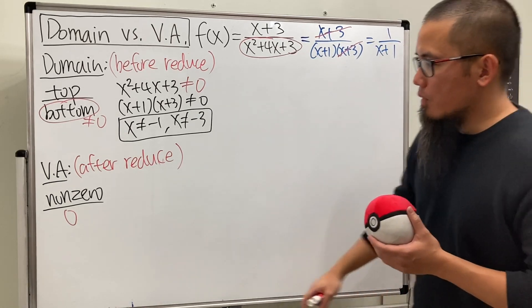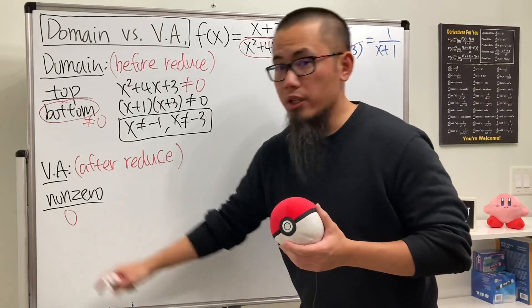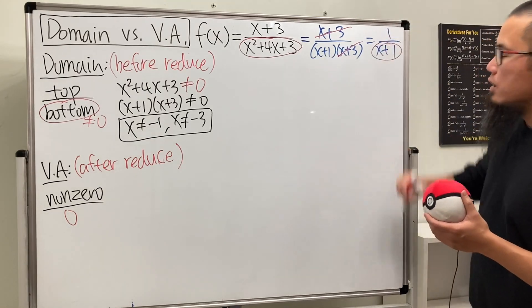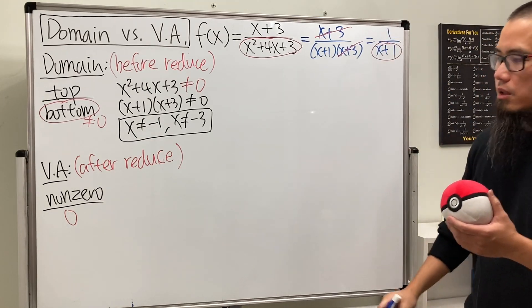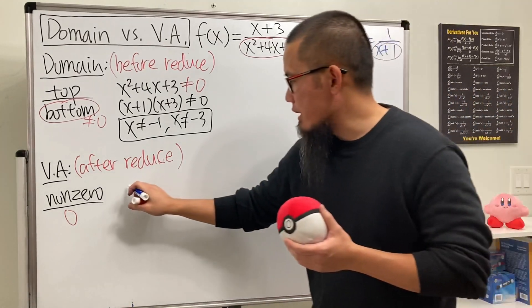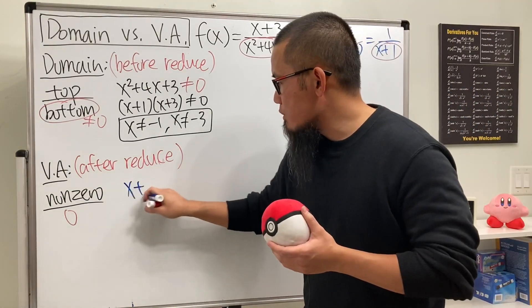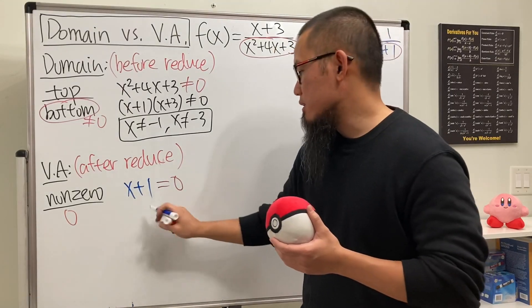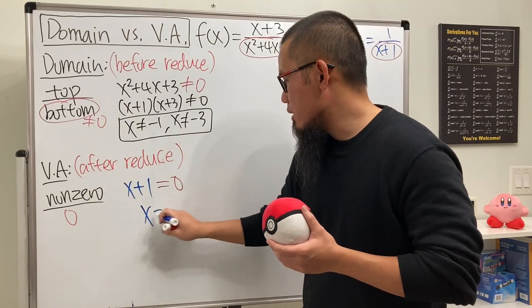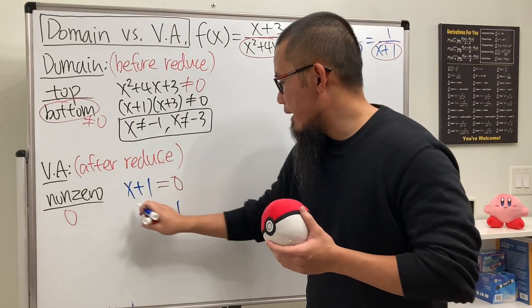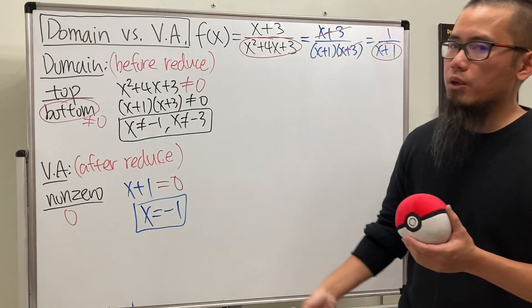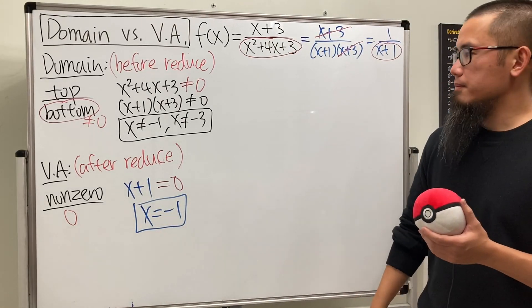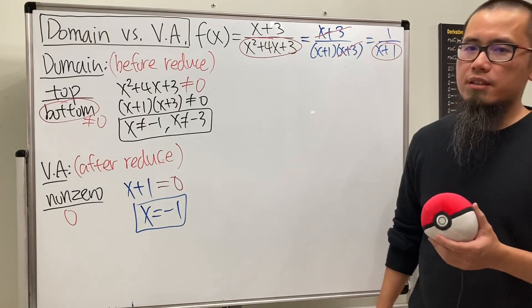Now we want zero on the bottom of the reduced form, so we set x + 1 = 0 and get x = -1. This is in fact the only vertical asymptote.